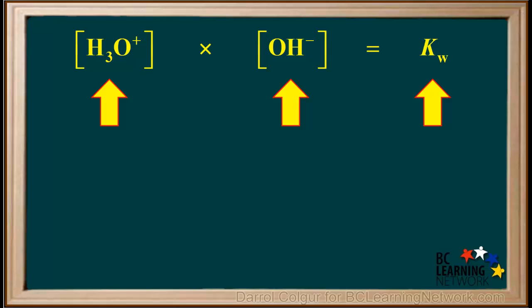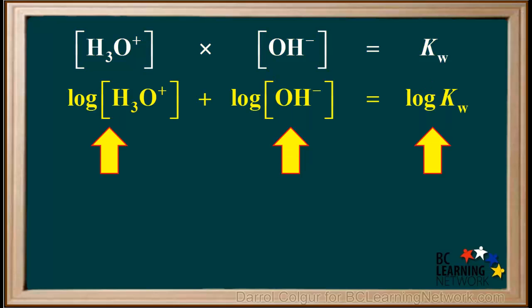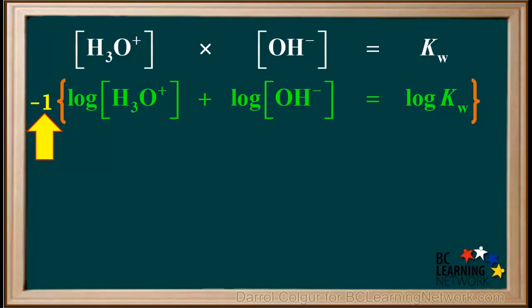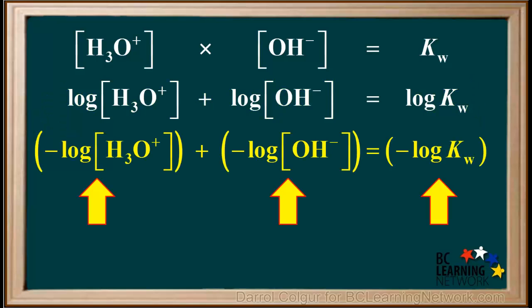We already know that in any aqueous solution, the concentration of hydronium times the concentration of hydroxide is equal to Kw. If we take the log of everything, it follows that the log of [H₃O⁺] concentration plus the log of [OH⁻] concentration is equal to the log of Kw. Now we'll multiply everything by negative 1, and we get that the negative log of hydronium ion concentration plus the negative log of hydroxide ion concentration is equal to the negative log of Kw.